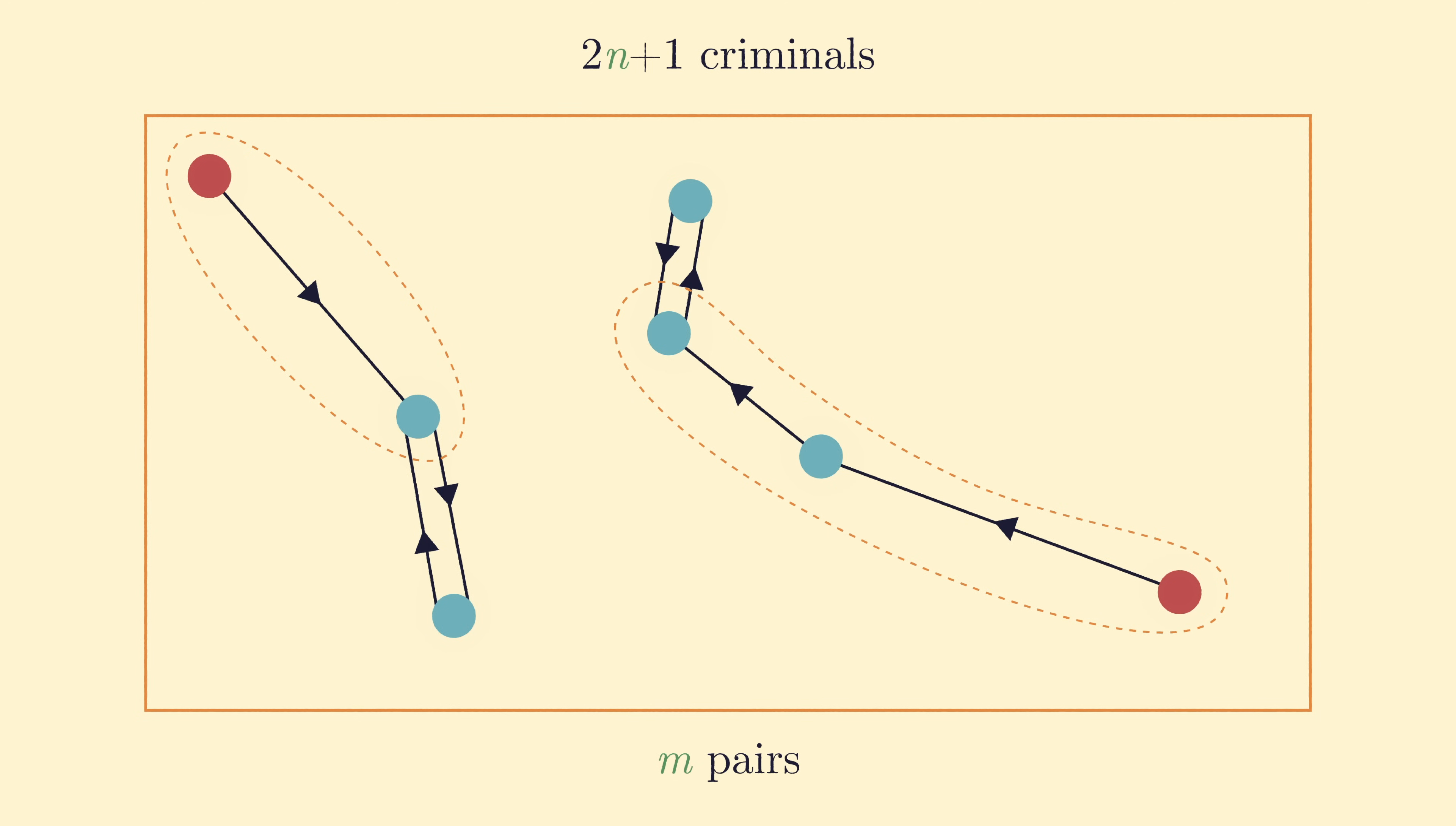However, any criminal which is at the start of a path in the graph is unwatched, since there exists no edge going into that vertex. And since the number of criminals was odd, at least one such criminal must exist, since we can't pair all of these criminals together, which completes the proof that my friend used.